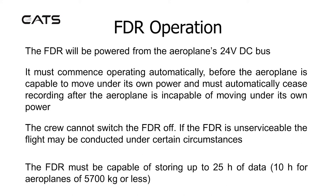FDR Operation. The FDR will be powered from the aeroplane's 24V DC bus. It must commence operating automatically before the aeroplane is capable of moving under its own power, and must automatically cease recording after the aeroplane is incapable of moving under its own power. The crew cannot switch the FDR off. If the FDR is unserviceable, the flight may be conducted under certain circumstances. The FDR must be capable of storing up to 25 hours of data, or 10 hours for aeroplanes of 5,000kg or less.